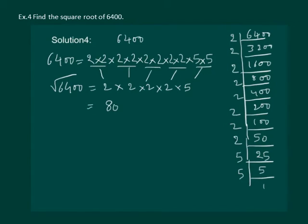Note that while factorizing, we are starting with 2, although we could have started with a bigger number. Because we need to prime factorize, 2 is a prime number and 5 is also a prime number, so we only use prime numbers during factorization.